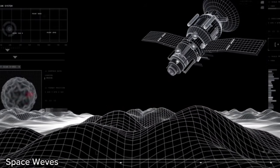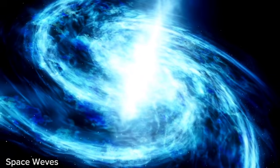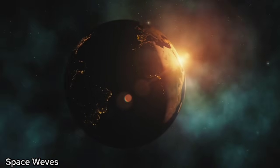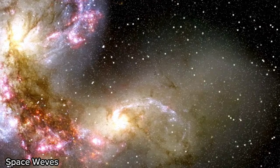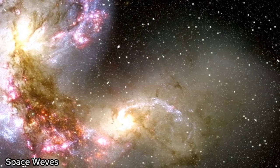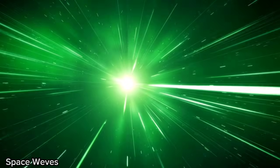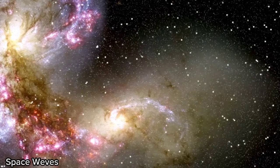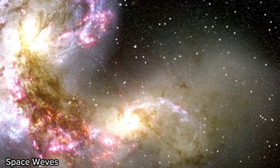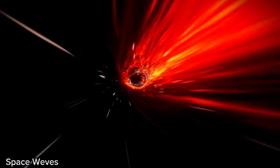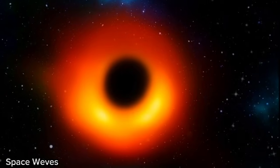Black hole possibility: if the remaining core of Betelgeuse is massive enough, exceeding about three times the mass of the Sun, it could collapse entirely into a black hole. This would be a spectacular event, as black holes are among the most mysterious and extreme objects in the universe. If a black hole forms, it could generate an intense burst of X-rays and gamma rays, which would be detectable by space observatories. However, due to Betelgeuse's distance from Earth, this black hole wouldn't pose any threat to us. Instead, it would become a valuable research target, helping scientists refine their understanding of stellar mass black holes.